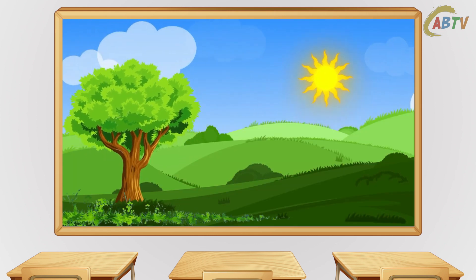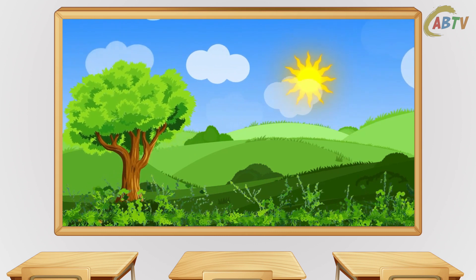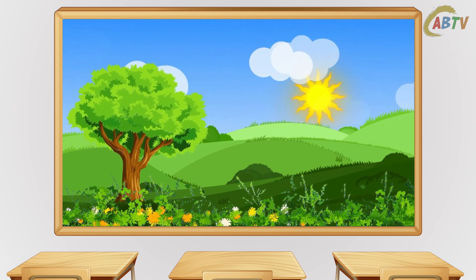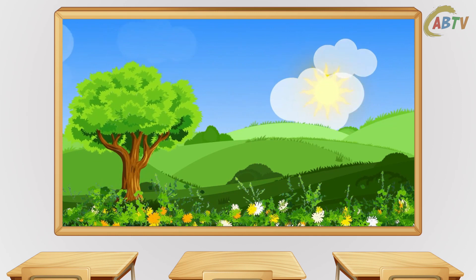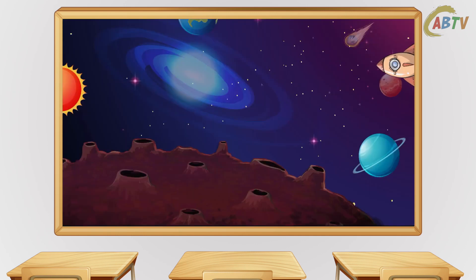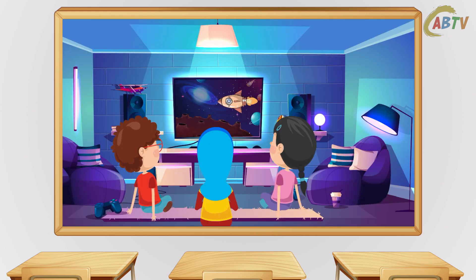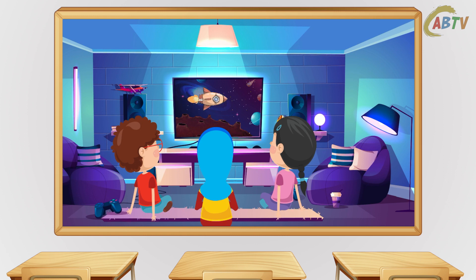Everything you see around you in nature was made by Allah. Allah makes all the beautiful flowers, all the birds and fish. Allah even made you and me. If you could go on a spaceship to another planet, Allah is there as well. Even right now when you are watching this video, Allah is with you. He is your best friend. When you are good, you make Allah happy and he loves you even more.